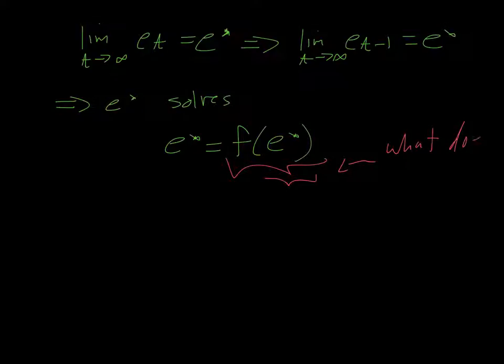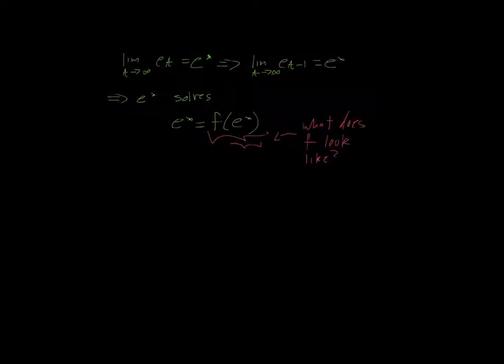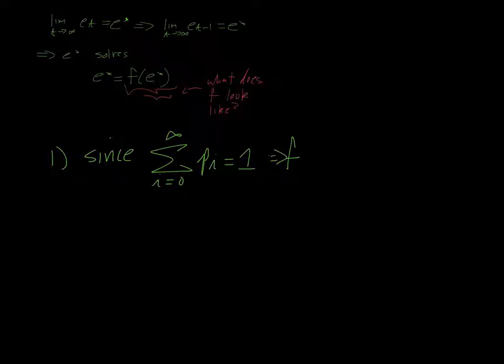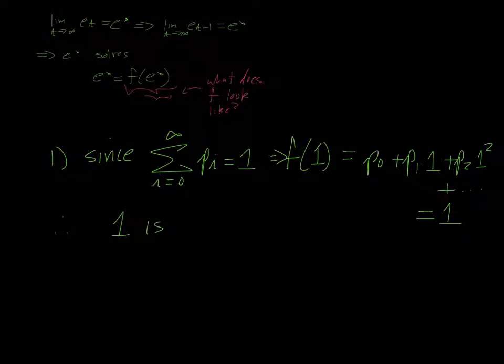So really, the properties of E star then all generate from the properties of F. So what properties does F have? What does F look like? For example, since all of the probabilities associated with offspring sum to 1, if we look at F of 1, that's just going to be the sum of all of those probabilities. And so, therefore, that's going to be 1. So 1 is a fixed-point of F. Now, it doesn't necessarily have to be the particular fixed-point we're looking at, but it is indeed a fixed-point of F.